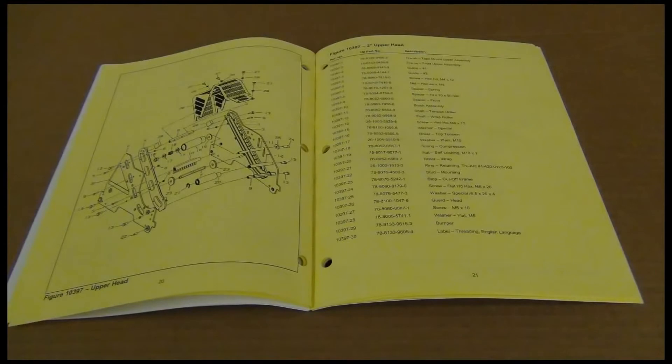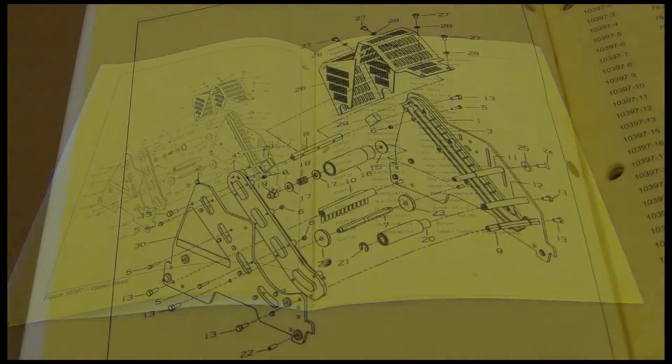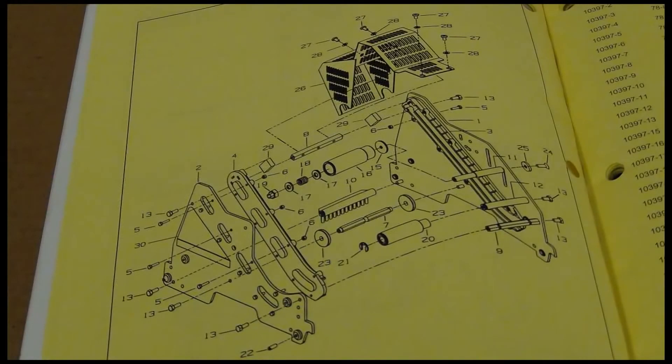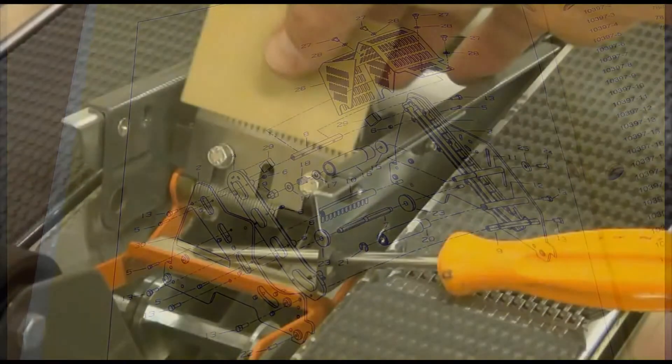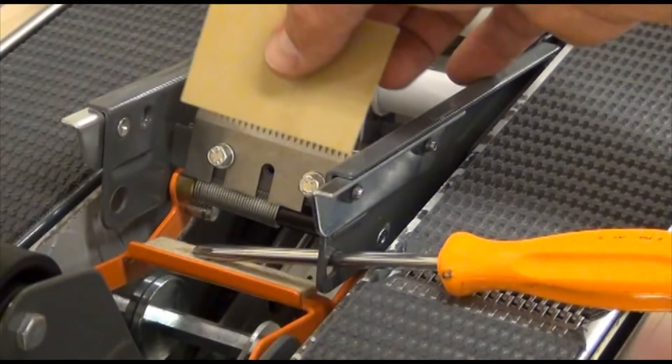Now we'll demonstrate some parts replacement procedures that are not obvious. In most cases, you can refer to the instructions manual parts list to see how parts are related for disassembly and reassembly. We'll demonstrate how to replace the taping head blade on a bottom mounted AccuGlide 2 Plus taping head. Upper and lower replacement is identical.